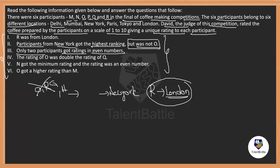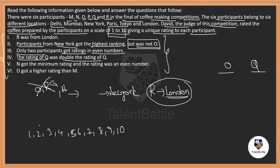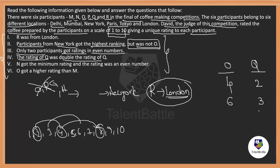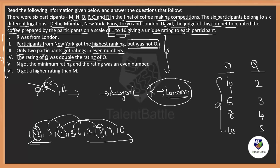Only two participants got rankings with even numbers. The ranking of O is double the ranking of Q. The possibilities are: Q=2, O=4; or Q=3, O=6; or Q=4, O=8; or Q=5, O=10. You cannot go beyond ten since rankings only go from one to ten.